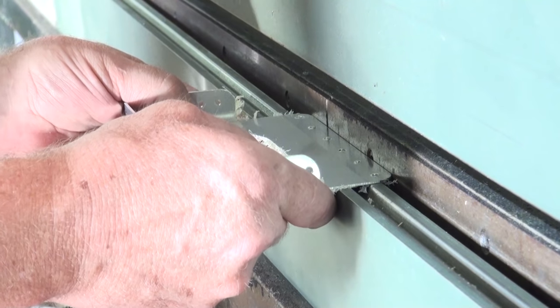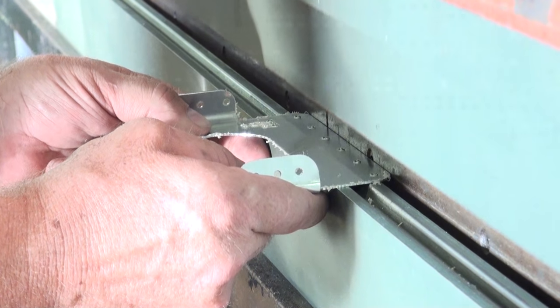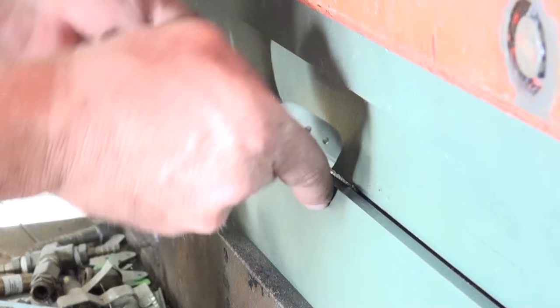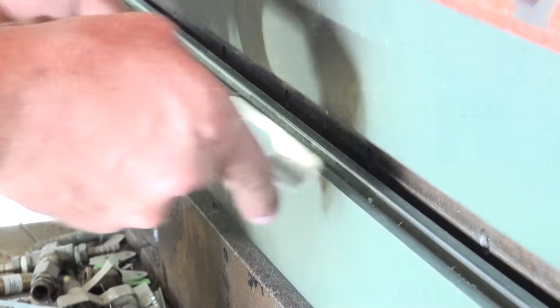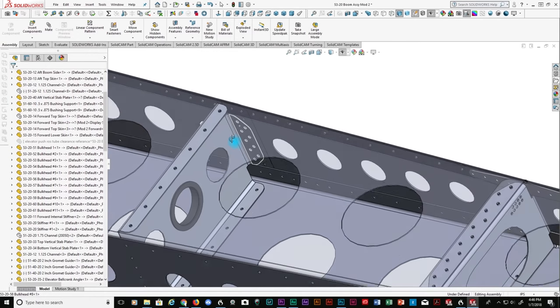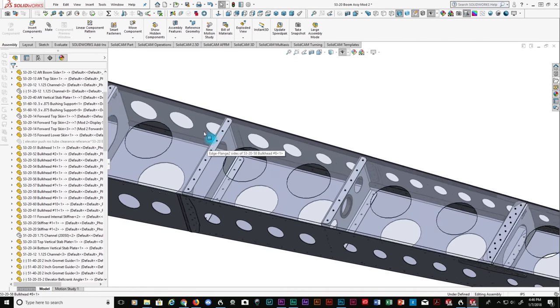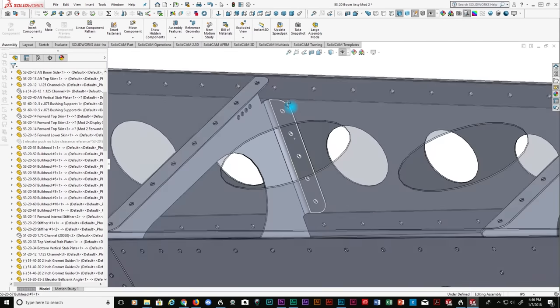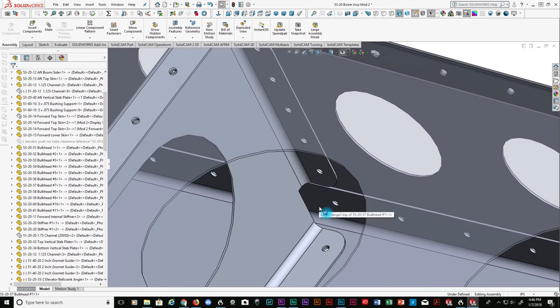There is literally only 20 thousandths clearance between the upper and lower flanges and the press brake die during the bending process. This design corresponds with the design of the fuselage sides allowing the upper and lower flanges to fit snugly between the fuselage boom and the side flanges.